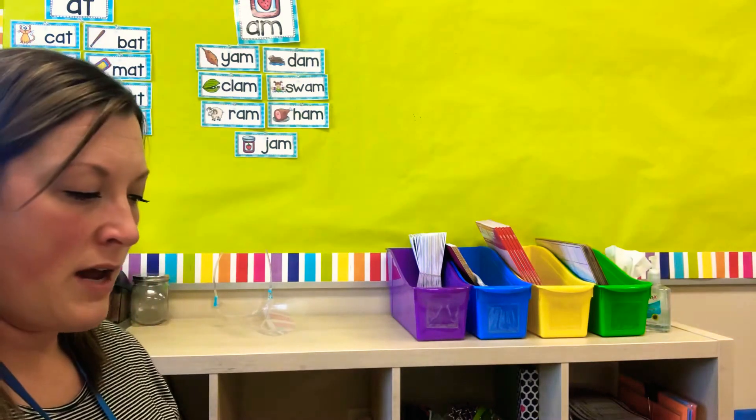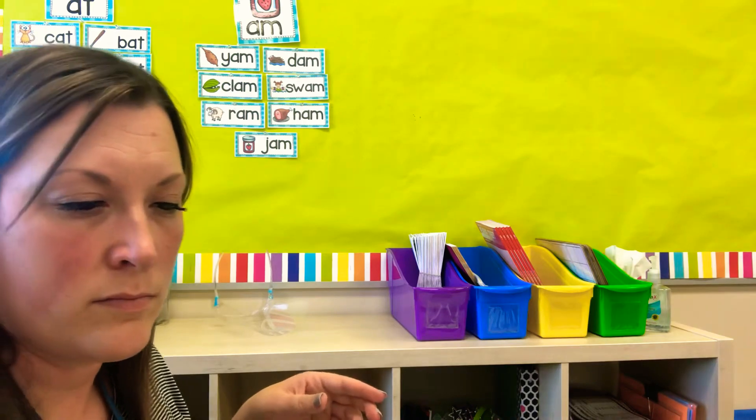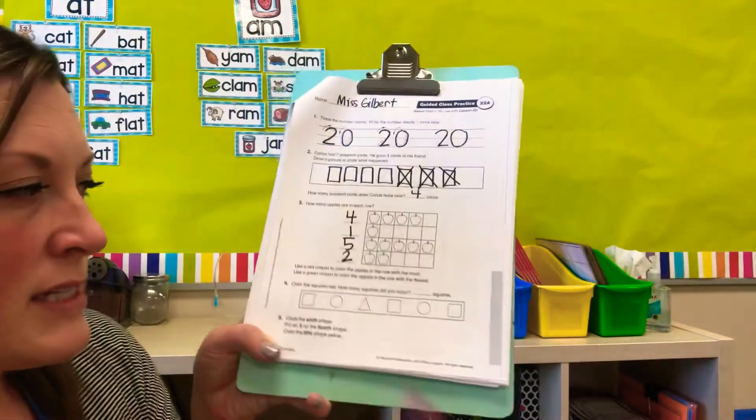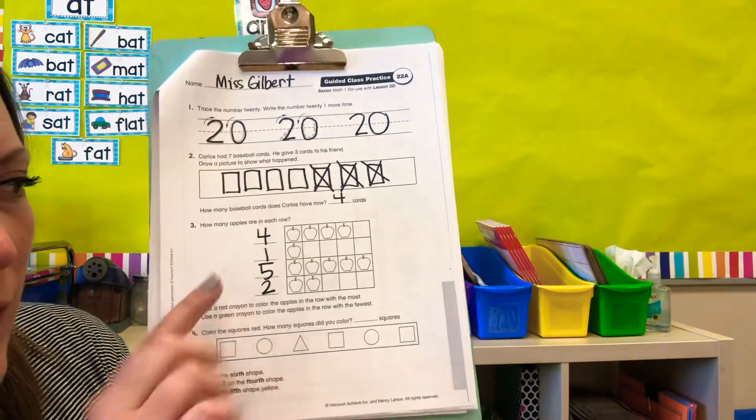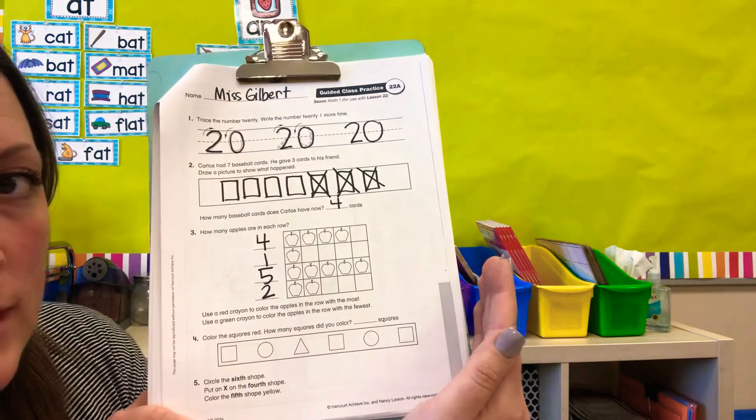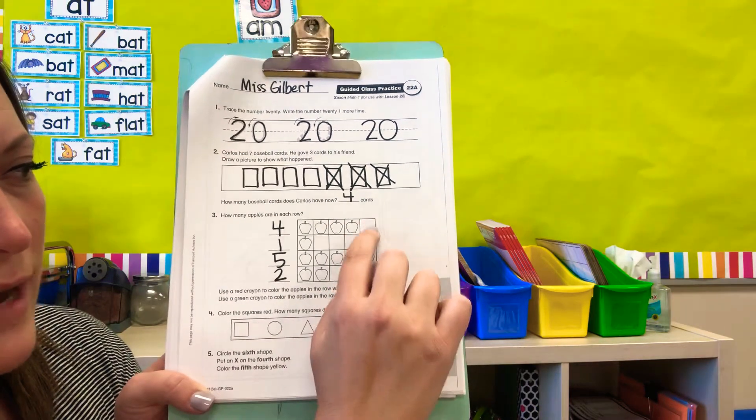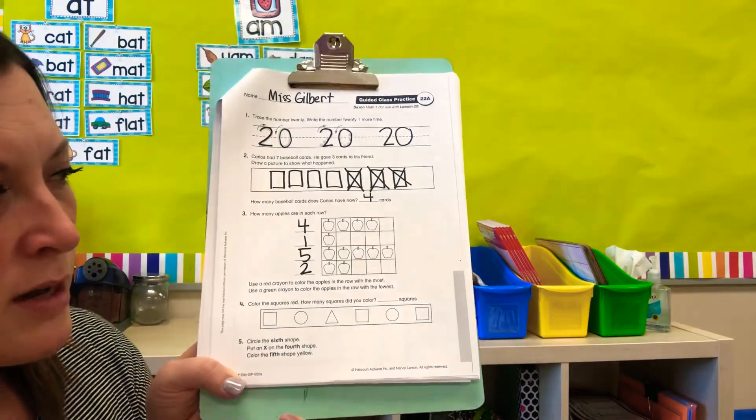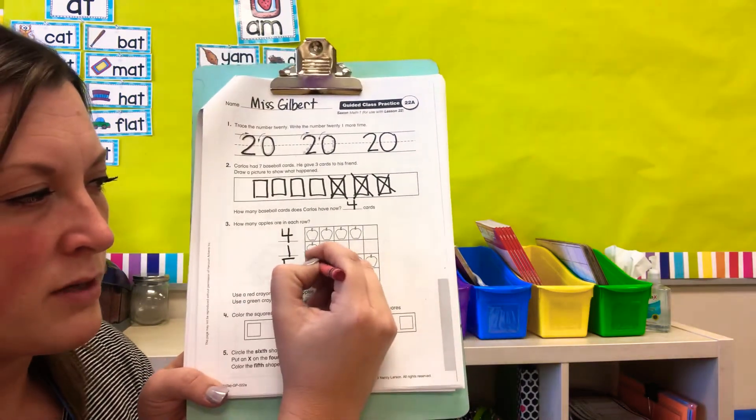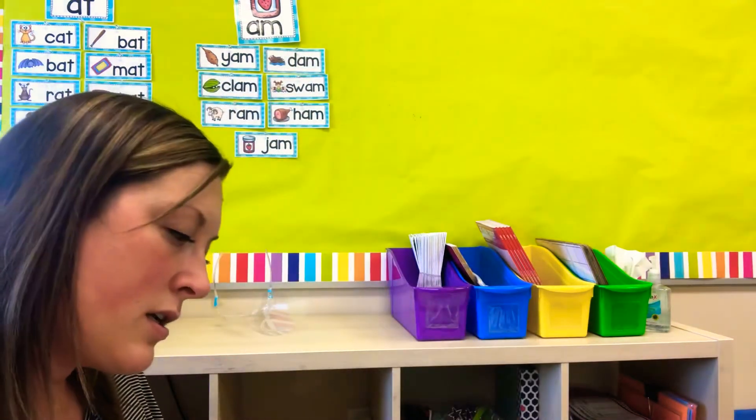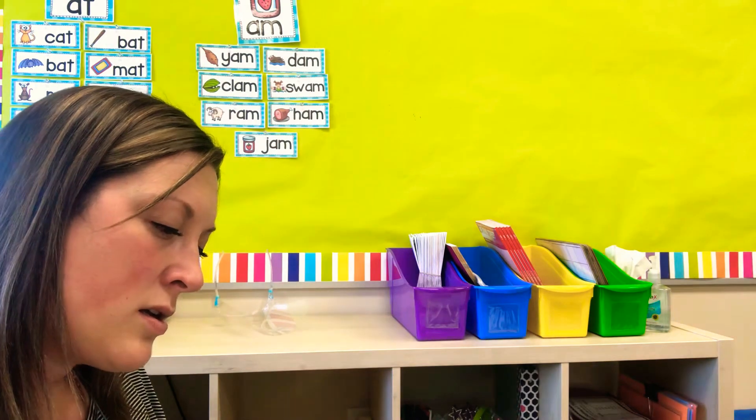Okay, you need a green crayon and a red crayon. All right, get your crayons. It says, use a red crayon to color the apples in the row with most. What you can do is you can find the apple row that goes the farthest because that will have the most. So right here, this goes all the way here and it's the one that has the most because these ones are empty. Or you can look at the number and see which one's the biggest. Is four, one, five, or two the biggest number? Five. So we're going to color those ones red. You can just circle them in. Color them red.